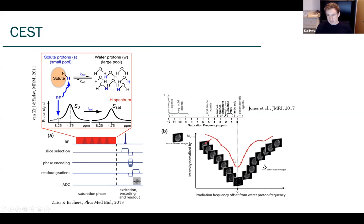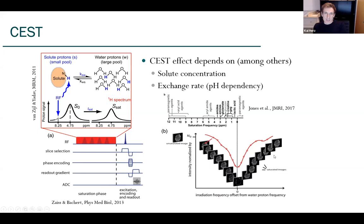We usually do this over a broader frequency range, positive and negative side from water, and then we normalize by an unsaturated image to get rid of the influences from the readout sequence. We usually acquire CEST spectra to get effects from a lot of different solutes - amines, amides, and so on. The CEST effect depends, among a lot of other parameters, on the solute concentration and the exchange rate, which is actually pH dependent, which makes it a very interesting marker for pathologies.